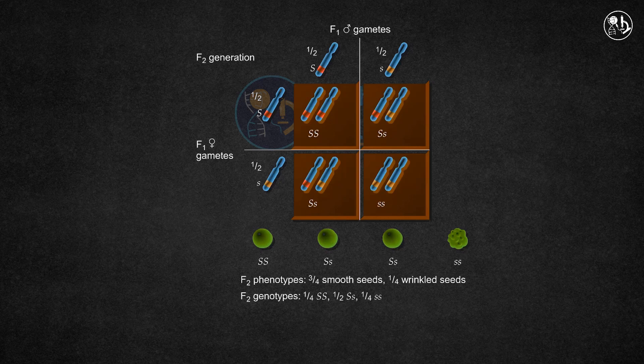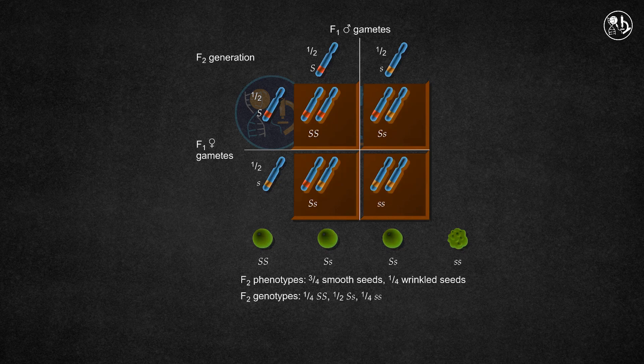There are three types of factor pairs: one capital S capital S, two capital S small s, and one small s small s, which determine the genotypic ratio of 1 to 2 to 1.